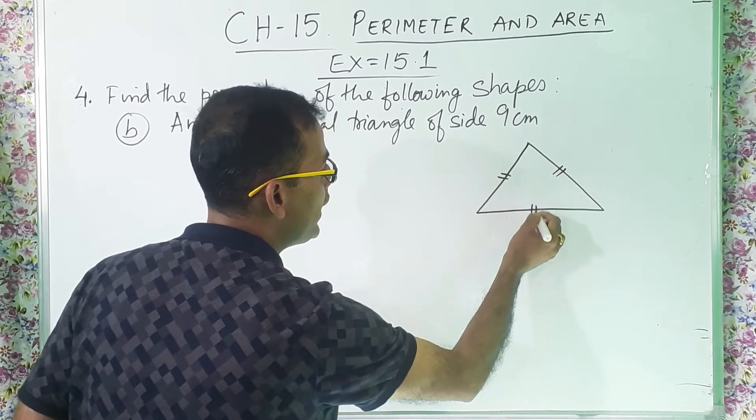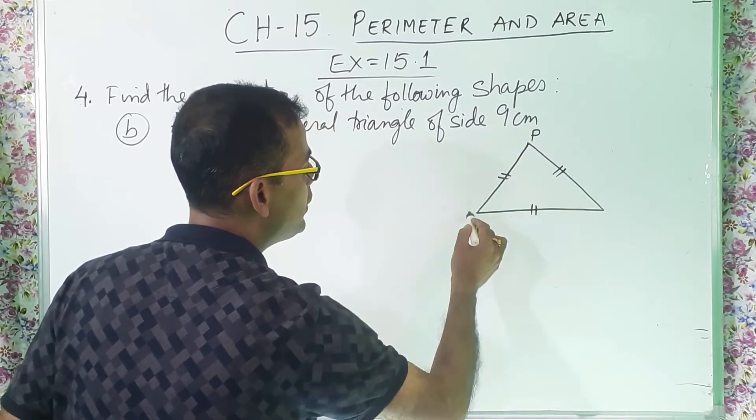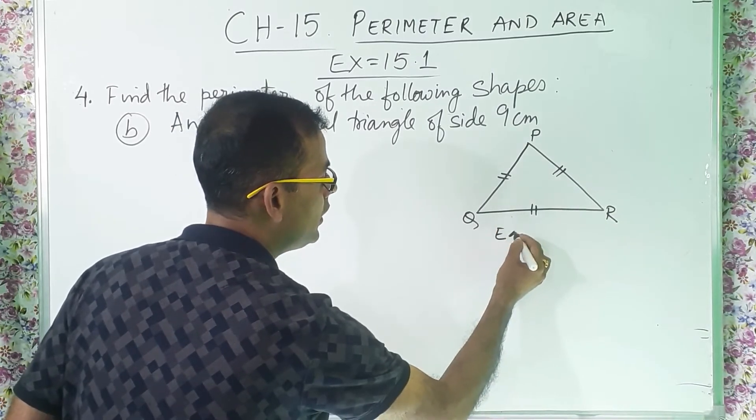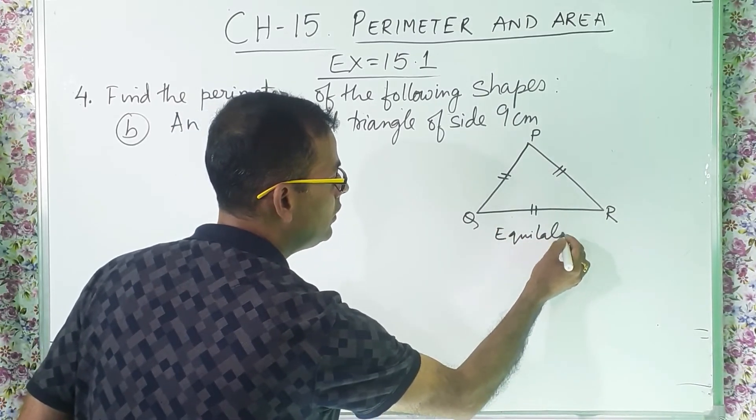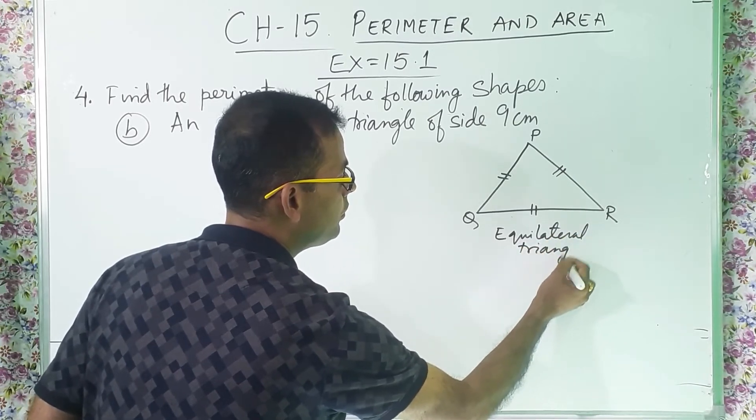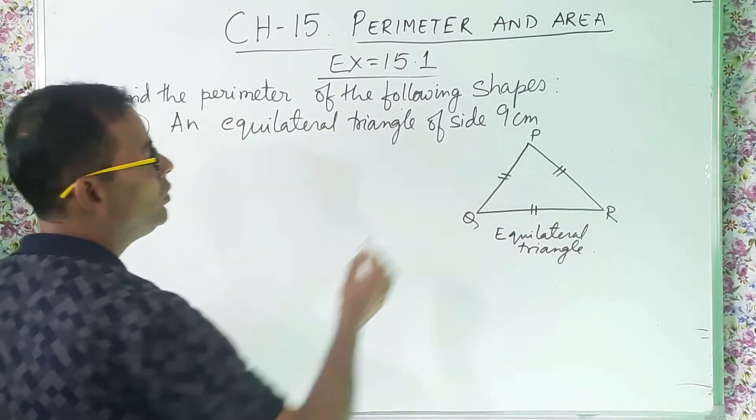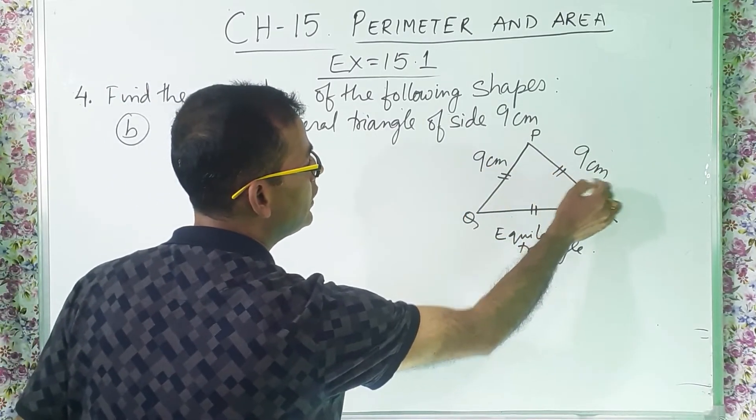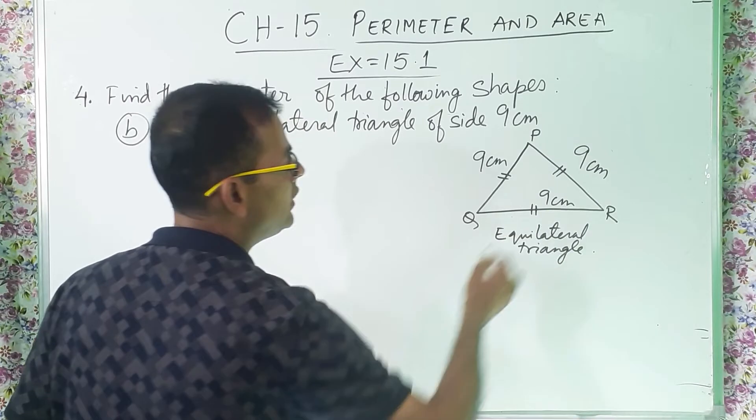And if I give the name P, Q, R, and this is what? Equilateral triangle. Now this side is also 9 centimeter, this side is also 9 centimeter.